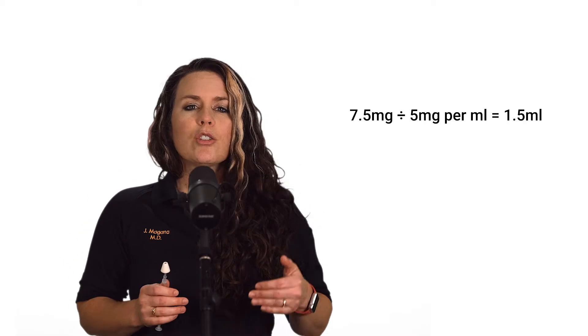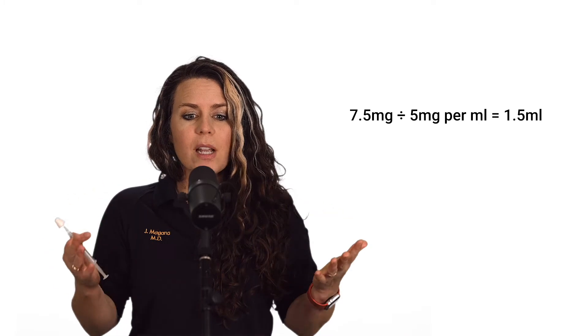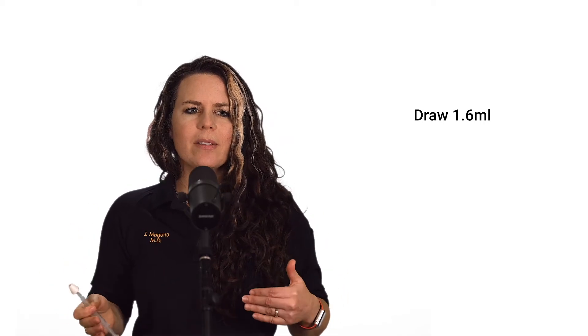That's what we want to give. Now, our concentration is 5 mg per ml, so we're going to divide 7.5 by 5. That gives us 1.5 ml. Now, our mucosal atomizer device has about 0.1 ml of dead space, so you want to draw up 1.6 ml.